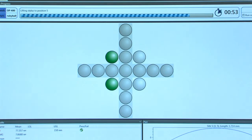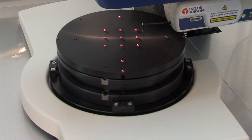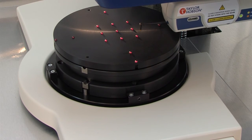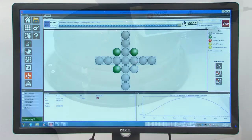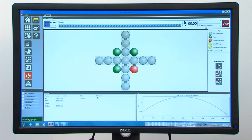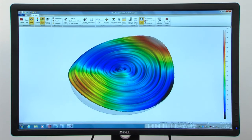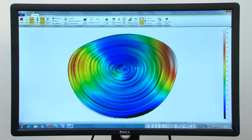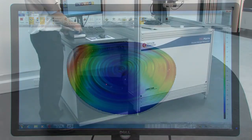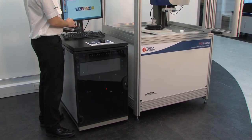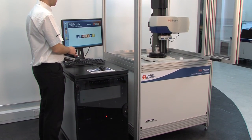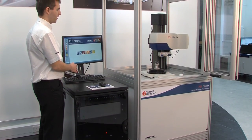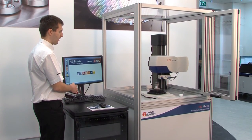The TallySurf PGI Matrix is a fully automated one-touch optics measurement system. It will increase your productivity with an easy to use interface and Tallymap analysis software. It's equally at home with single or multiple parts, is fast and accurate. The PGI Matrix, from Taylor Hobson.